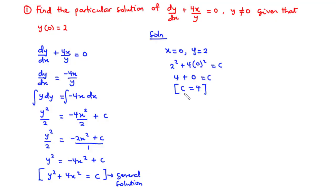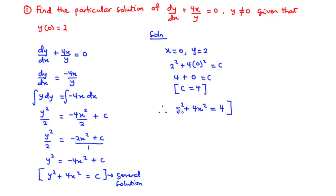Next, we plug the value c equals 4 into the general equation, and that becomes the particular solution. So we have y squared plus 4x squared equals 4. This is how to find the particular solution of a given differential equation when you are given the initial condition.